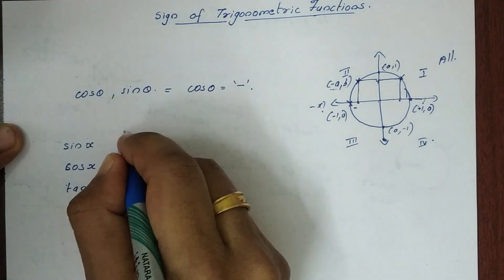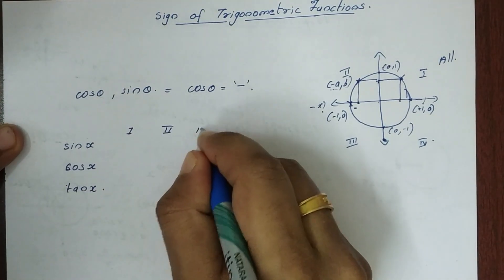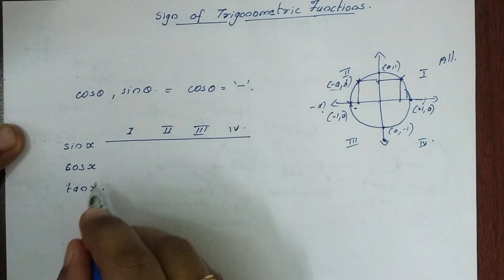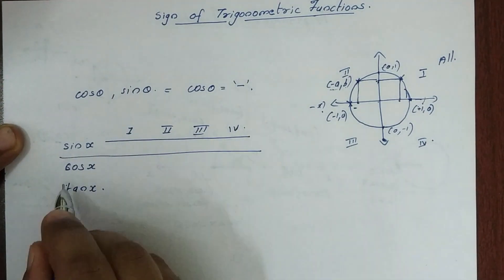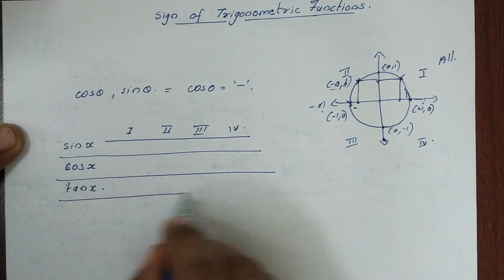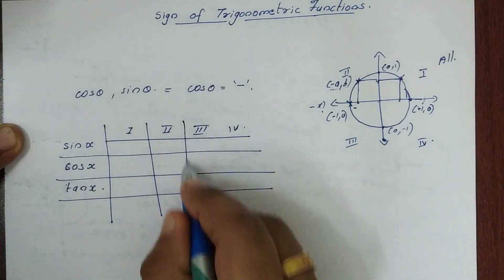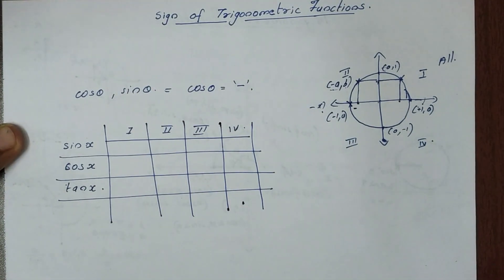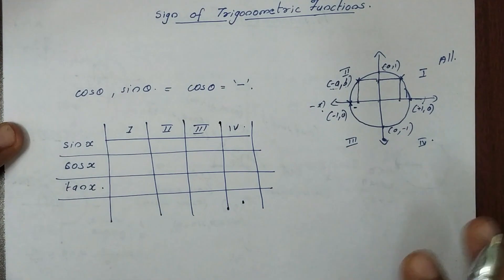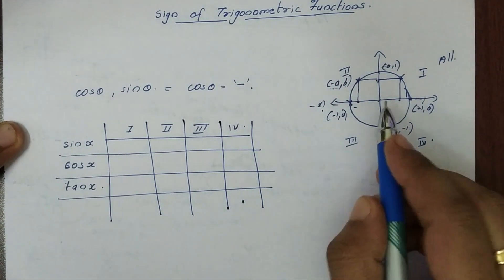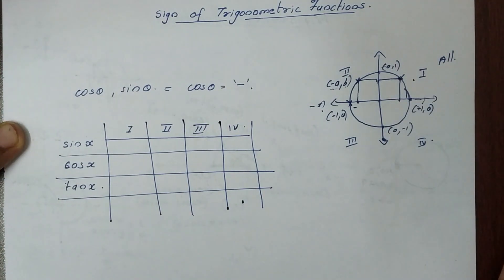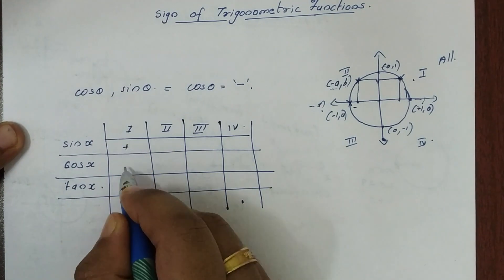Then we have: first quadrant, second quadrant, third quadrant, fourth quadrant. In the second quadrant, we note sin in this quadrant. First quadrant is all positive — you already know first quadrant is positive.